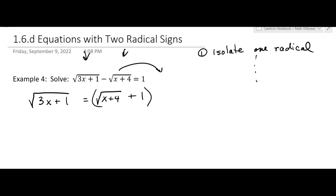You could write it the other way — 1 plus the square root of x plus 4 — but it doesn't matter. What we're going to do is square both sides. The idea is: get one radical by itself, and we've done that, so now we're going to square both sides and see what happens.